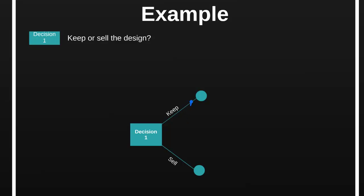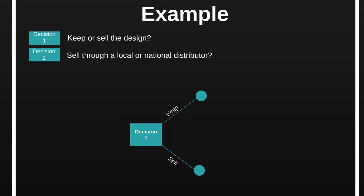The outcomes of these two options we represent using circles. However, our decisions don't end here. If we were to sell the design, we would immediately earn the one-off payment from that other company. However, if we choose not to sell, we need to produce the new product and also make sure that we sell it. In terms of selling it, we need to choose a distributor. Our company has contacts with a national distributor and a local distributor, and we need to choose one or the other. So we can add this second decision to our decision tree.